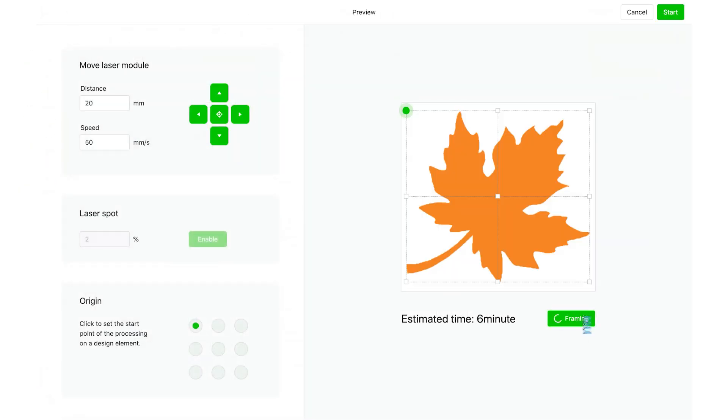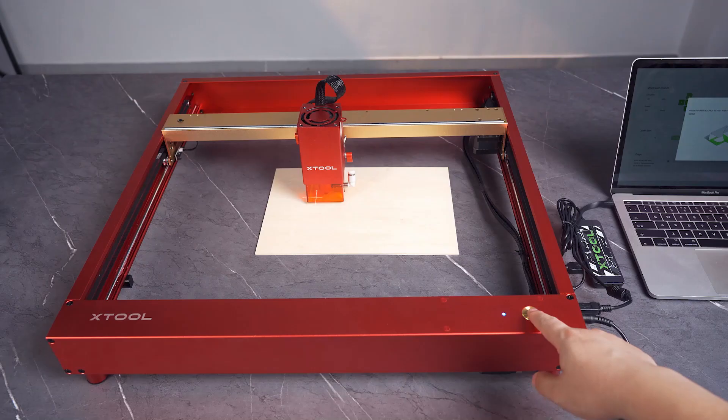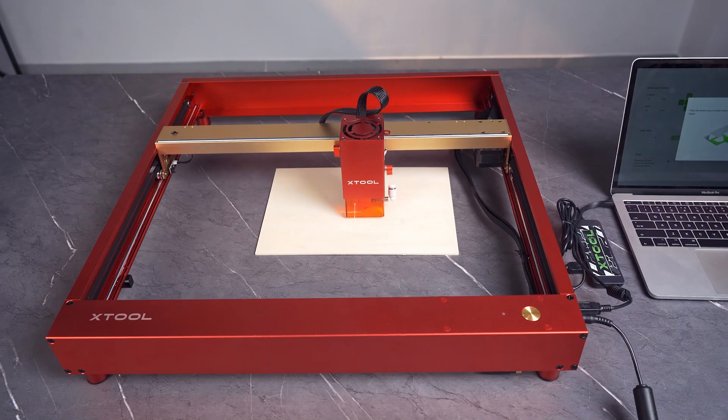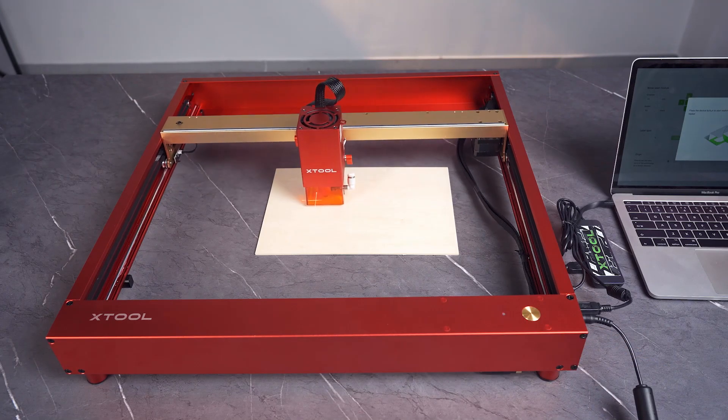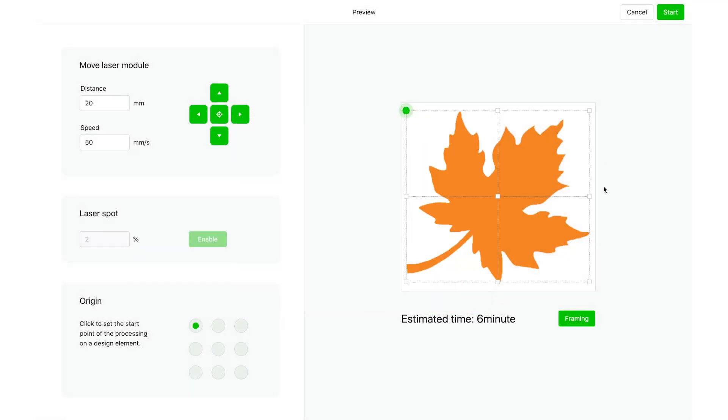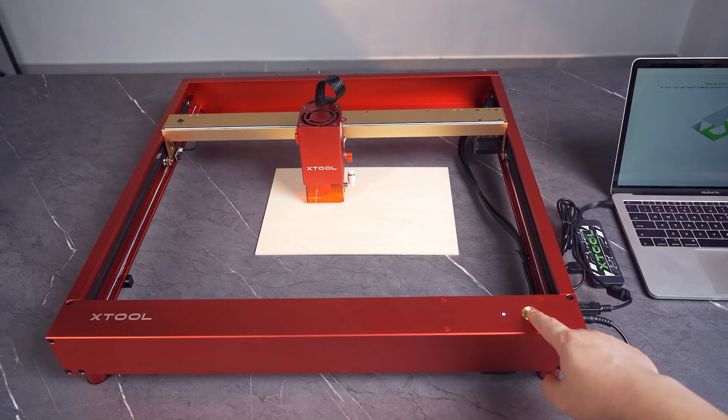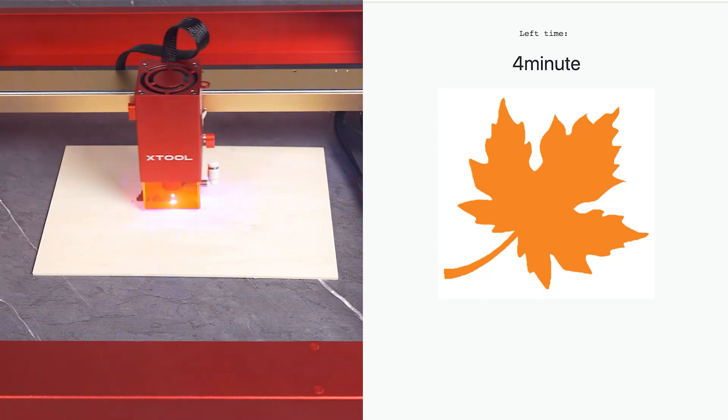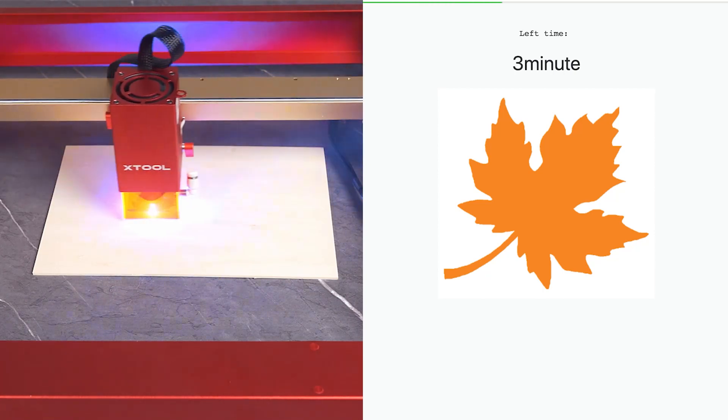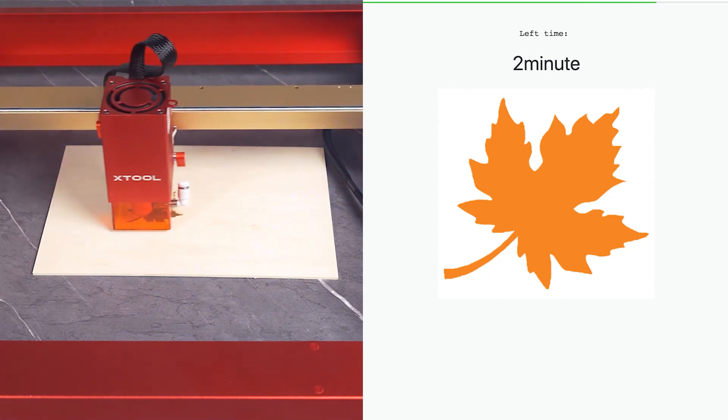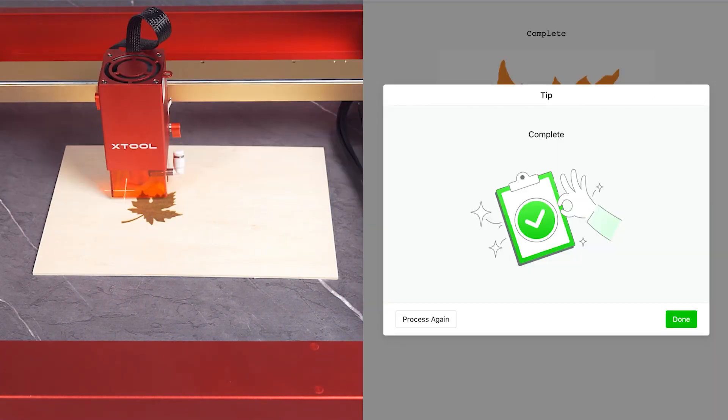Click Framing. Press the button to start framing. Preview whether the design elements are to be processed in the expected area. Press the button to start processing. Click Start to start processing. Wait for the processing to complete. Click Done after the processing is complete.